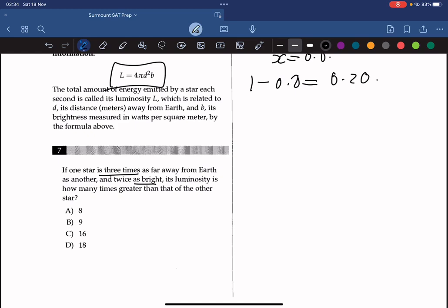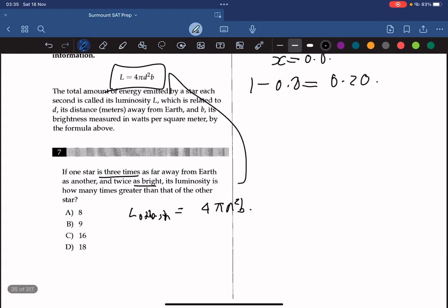So this question might be worded in a way that makes you think it's harder than what we've done. But keep in mind that it's the same as what we've been doing in the past questions. So we just find a new formula. L of the other star is equal to 4 pi D squared B, which is the original formula given. And we need to find a new formula, which is L star, which is equal to 4 pi times 3D squared multiplied by 2B.